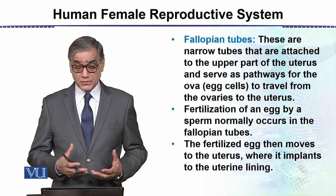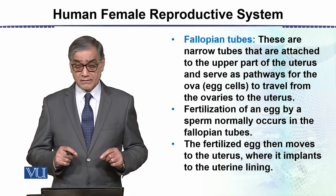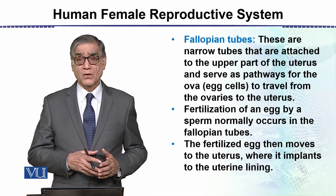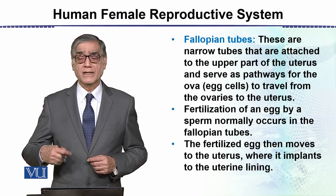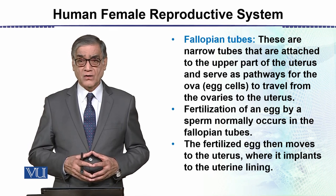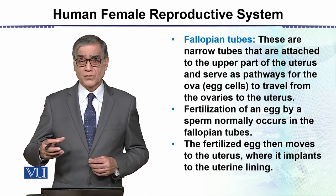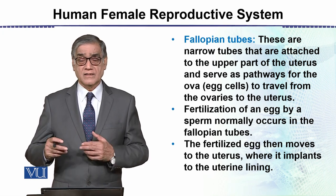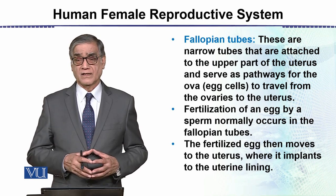The fallopian tubes are very narrow tubes. One end is connected with the uterus, while the other end is open but surrounded by finger-like structures called the fimbriae. Through the movement of the fimbriae, the egg is brought into the fallopian tube. This is in fact the part where fertilization of the egg occurs.